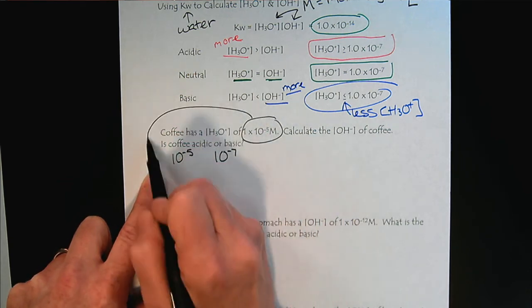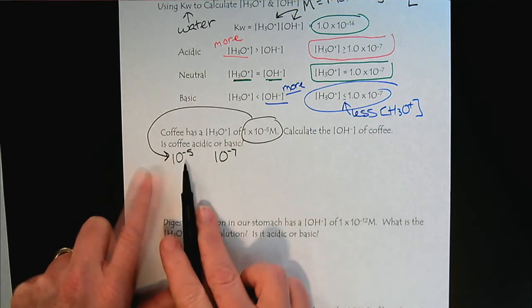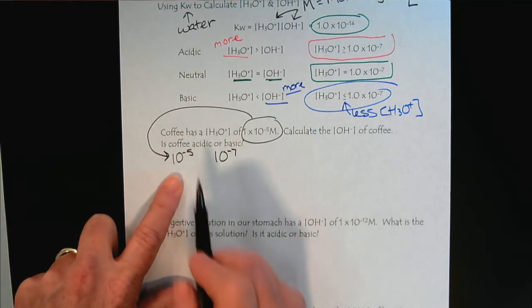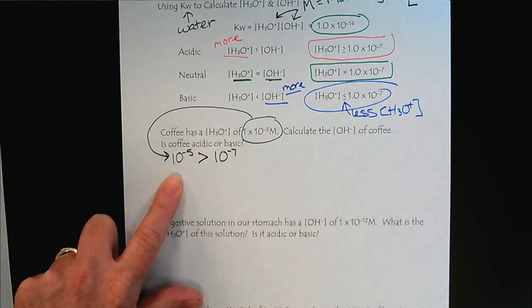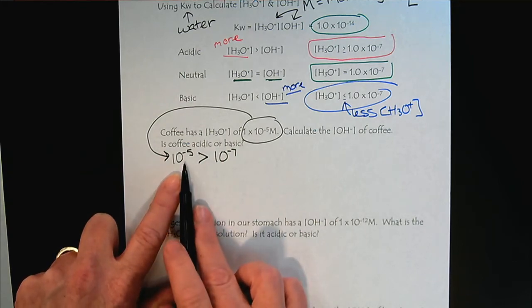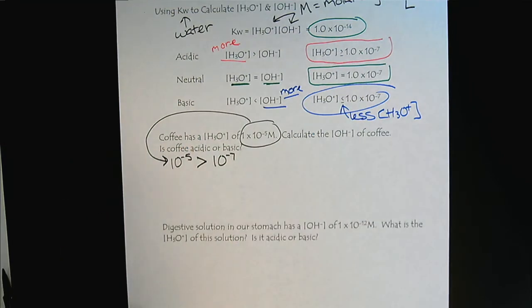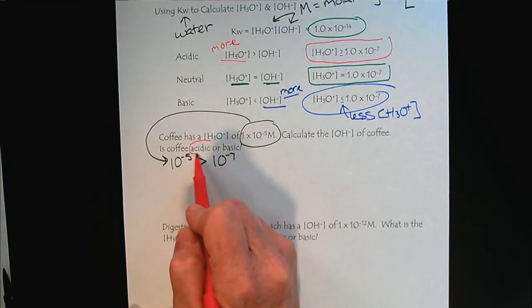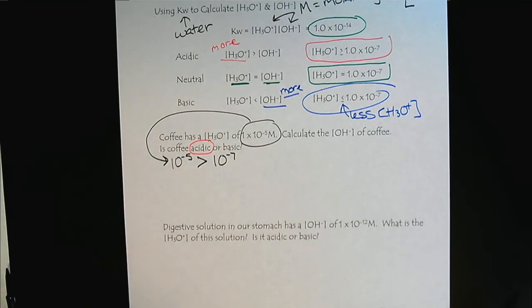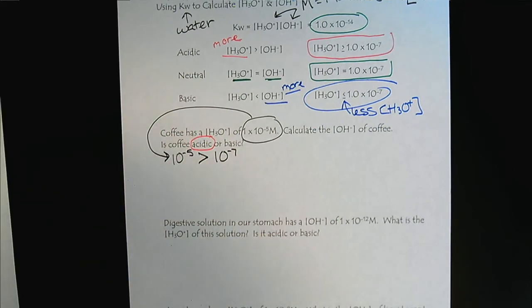So the 10 to the minus 5, that came from our question. Which number is bigger? 10 to the minus 5 is a bigger number. So since this concentration is greater than 10 to the minus 7, coffee is acidic. Which is why for some of us it can upset our tummies.